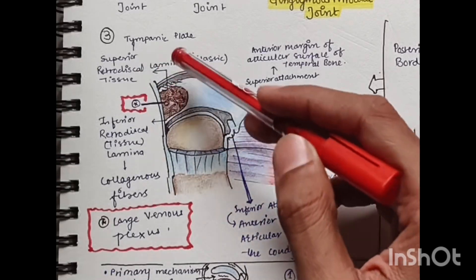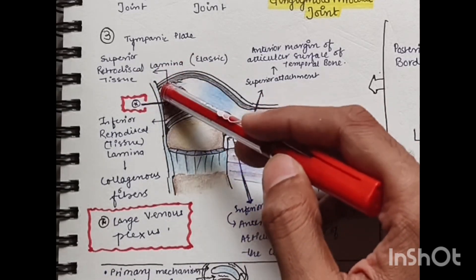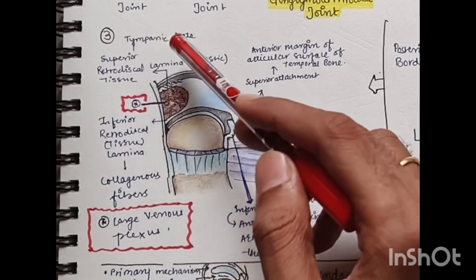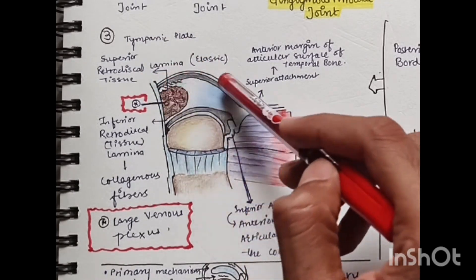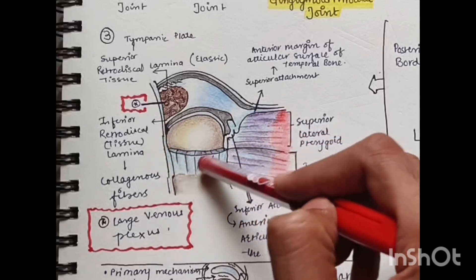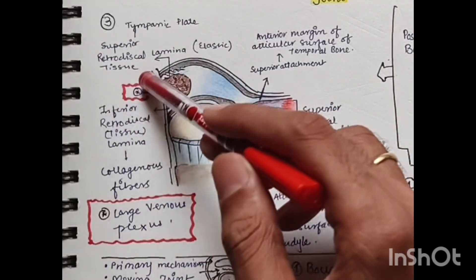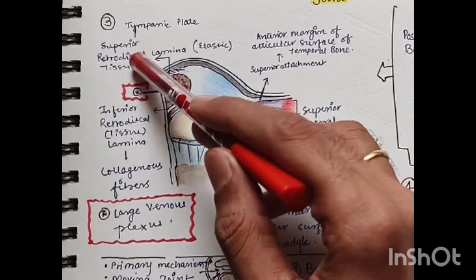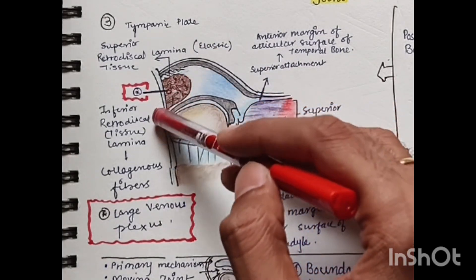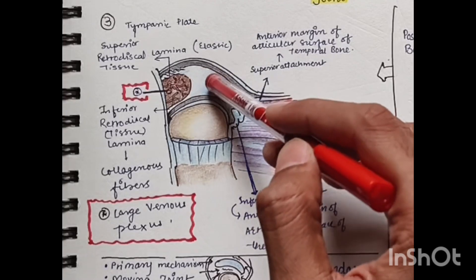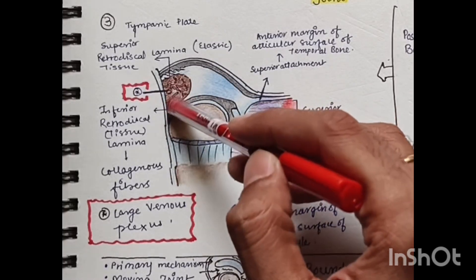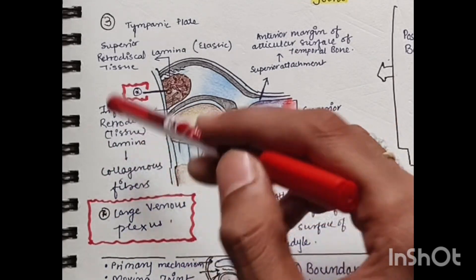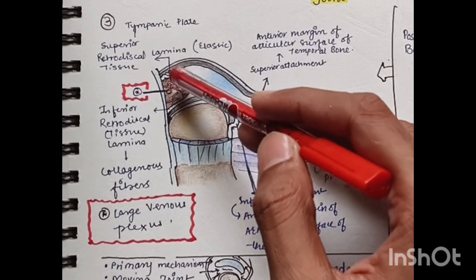Posteriorly there are two different laminae. Superiorly we have the superior retrodiscal lamina, which is elastic in nature and is responsible for retraction of the disc when the TMJ is relaxed. This superior retrodiscal tissue attaches the posterior border of the disc to the tympanic plate. Inferiorly we have the inferior retrodiscal lamina, which attaches the disc to the posterior border of the condyle. It is made up of collagenous fiber and is not elastic.